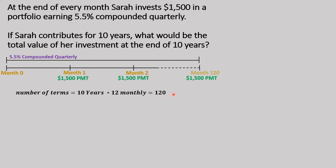That gives us 120 payments, so Sarah puts down $1,500 for the next 120 months. The question asks for the total value of Sarah's investment at the end of 10 years, which means we're calculating the future value of the annuity. We take this information and put it into the time value of money variables for the financial calculator.